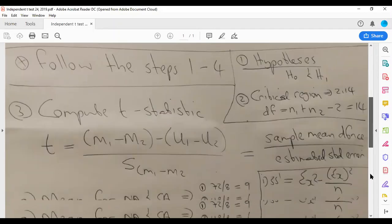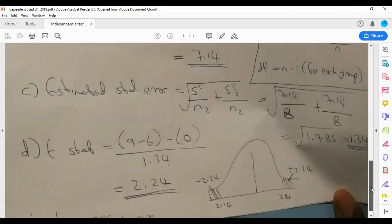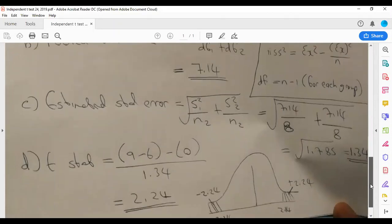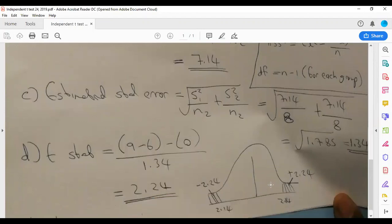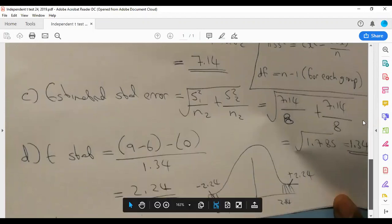Any value that you're going to obtain that is more than that, we reject the hypothesis. Any value that we get that is less than that, we fail to reject the hypothesis. Now let's go back.